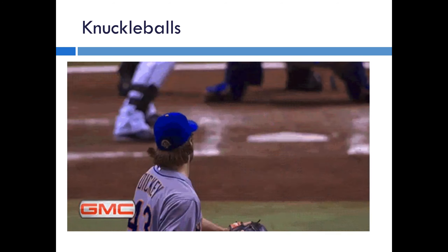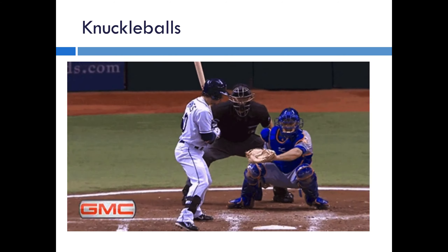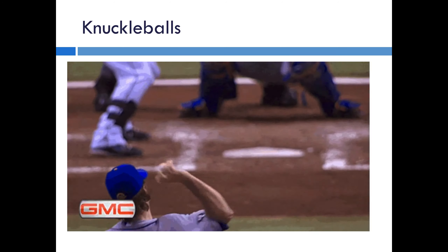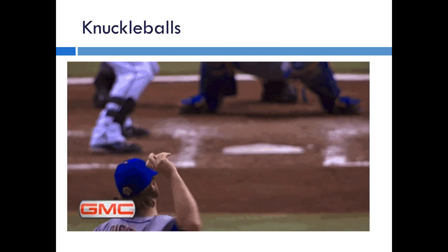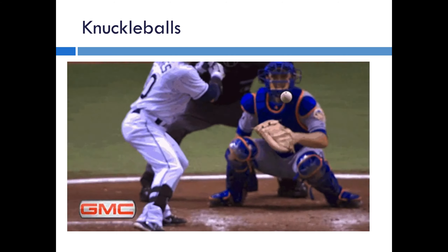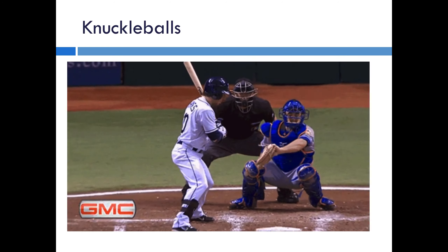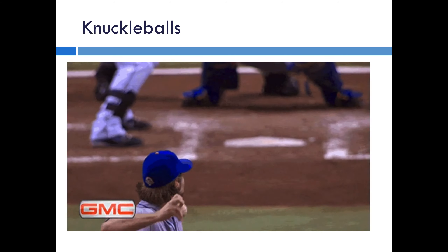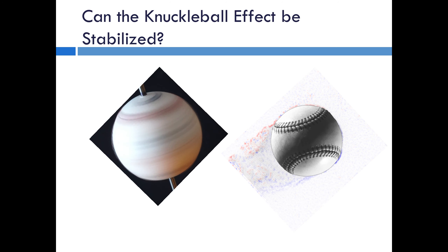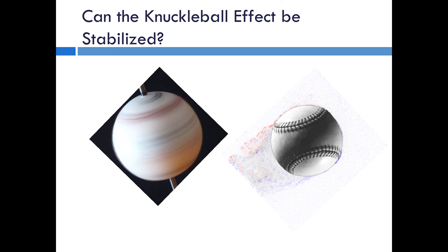These effects have been used for probably decades or hundreds of years in what's called a knuckleball. This is a pitch that has a random orientation and is not really rotating as it goes into home plate. As a result of the effects I've been showing you, the force on the ball can change as it flies, giving it really random motion. Right now I don't believe anybody in the major leagues is throwing a knuckleball — it's very difficult and takes a long time to learn. But we want to pose the question: what would happen if you could cause this effect to be stable?